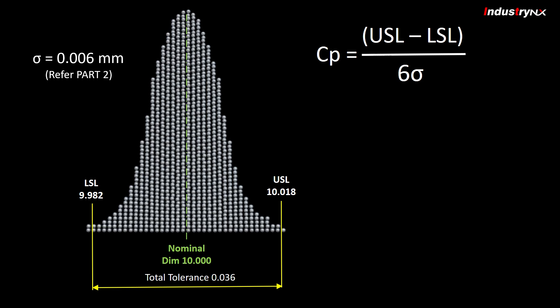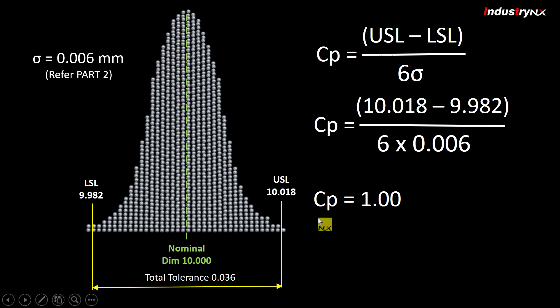Therefore, CP can be calculated as per given formula. Hence, CP is equal to 10.018 minus 9.982 divided by 6 sigma, which will result into CP value as 1.